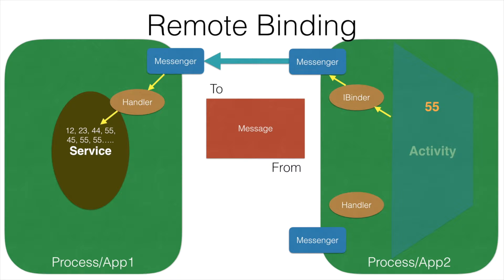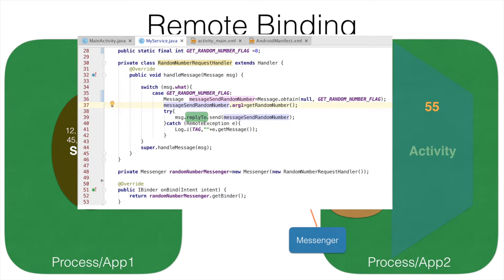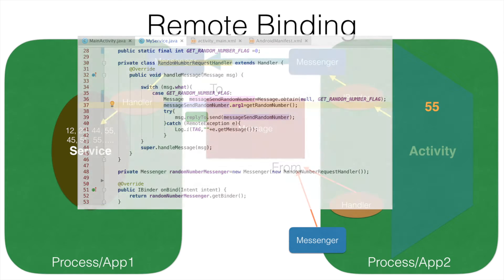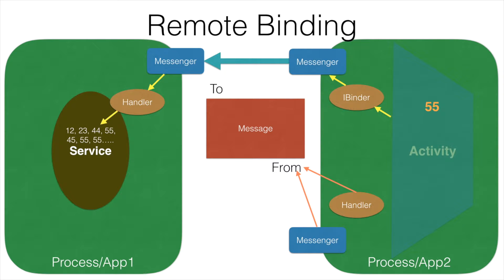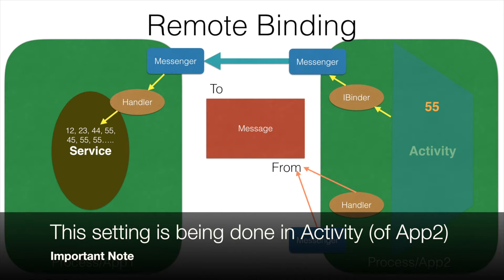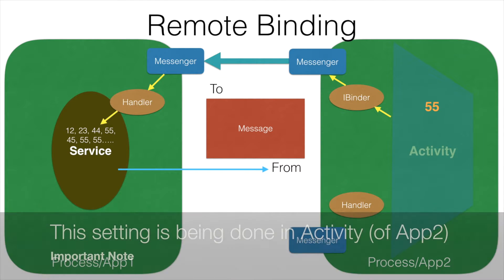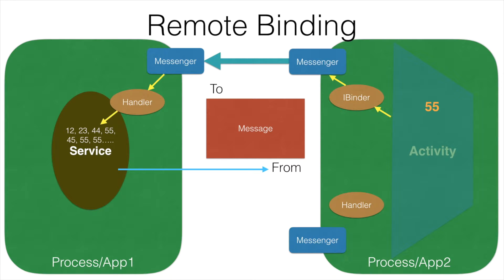What this handler will basically do is, on receipt of a message from the service, it will process it and set the value — whatever random number it received from the service — to the activity. So when we are sending the message we need to set the messenger and handler into the message. If you remember, we had used an attribute called replyTo. We need to set this messenger, which in turn has a reference to the handler, to the replyTo attribute of the message. After setting it, the service will reply back through the messenger set in the replyTo attribute, and in this way the random number will be channeled to the messenger and then to the handler, finally setting the value to the activity.